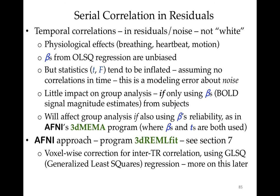Another problem is with noise. When you have temporal correlations in noise — that is, the noise is not white — this can be caused by physiological effects such as breathing, heartbeat, and motion. The betas calculated from ordinary least squares regression are unbiased — they don't contain systematic error from this correlated noise in time — but the statistics computed for them, the voxel-wise t or f for the betas, are done assuming no correlations in time. This is a modeling error about the noise, not about the signal, unlike the multicollinearity issue.